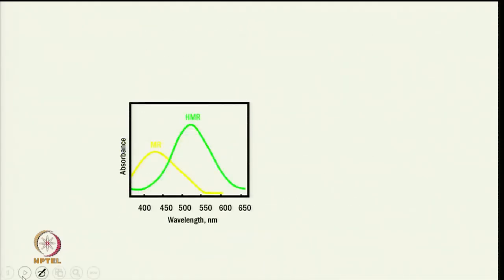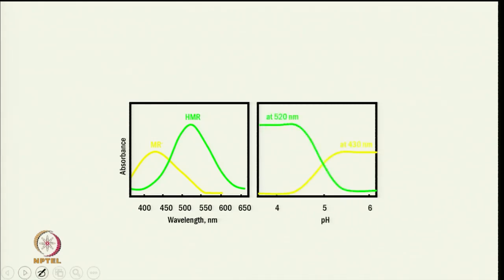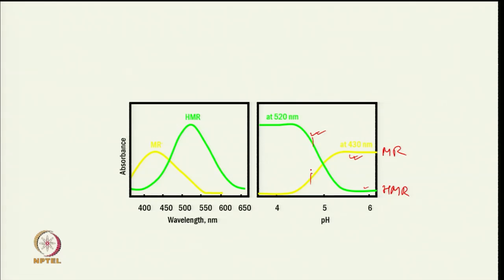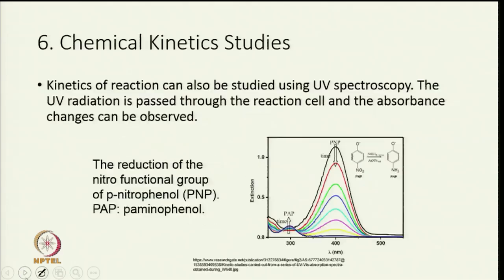By taking the ratio of these absorbances, we get the salt-to-acid ratio, which helps in determining the pKa value at a particular pH. Absorbance at 520 nm decreases with increasing pH while the peak at 430 nm due to MR increases. At pH 4, HMR is present; at pH 6, MR is present. In between, the acid-to-salt ratio gives us the pKa.